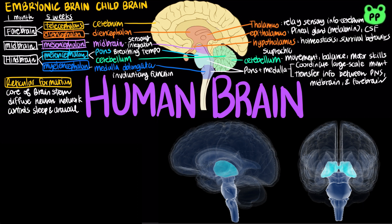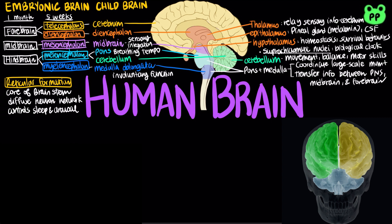The hypothalamus also regulates circadian rhythms such as the sleep-wake cycle. It contains a pair of suprachiasmatic nuclei, which function as a biological clock. Biological clocks usually require external cues to remain synchronized with environmental cycles.